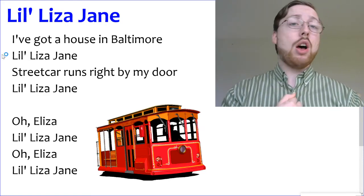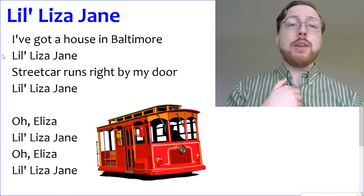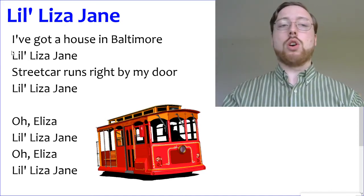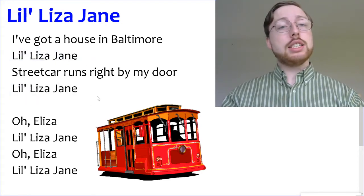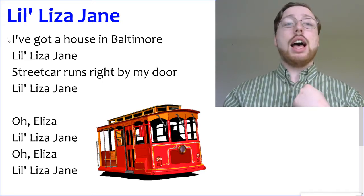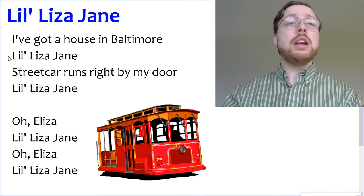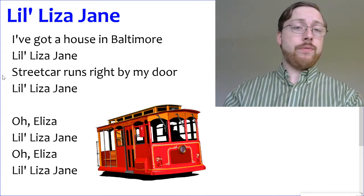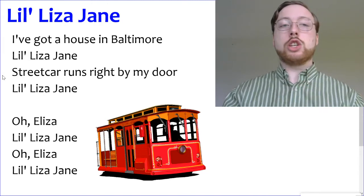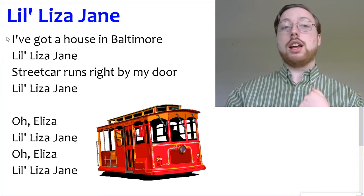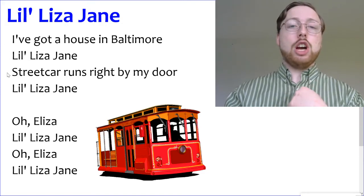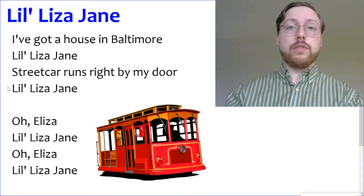I've got a house in Baltimore. Streetcar runs right by my door. I think some of you may have made a mistake — remember, you're not going to repeat after me, you're singing your line. Let's try it again. Make sure you sing your lines, not my lines. I've got a house in Baltimore. Streetcar runs right by my door. I was humming along to try and help you remember that line. Let's try one more time — I'll still hum. I've got a house in Baltimore. Streetcar runs right by my door. How'd you do? Better?